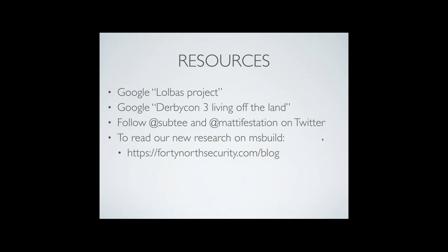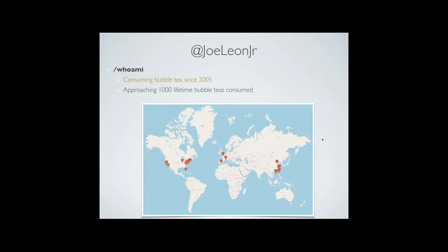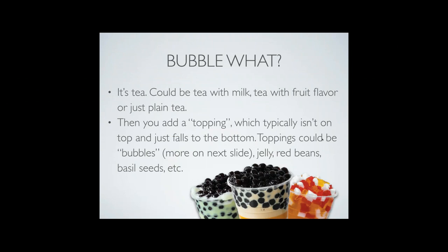Enough tech stuff — bubble tea! A little background: I've been consuming bubble tea since 2005 and I'm approaching 1,000 lifetime bubble teas consumed. I've put together a map of all the different cities where I've consumed bubble tea — heavy in the US where I'm from, but also in Europe and throughout Asia. So what is bubble tea? It's literally tea — iced or hot — with milk maybe, or some fruit flavor, or just plain. Then you add a topping, which is a bit of a misnomer because it sinks to the bottom. A topping could be bubbles, jelly, red beans, basil seeds — there are a lot of different things it could be.